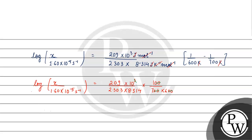Solving this: 1.60 into 10 raised to the power minus 5 per second equals 10 raised to the power of 209 into 10 cubed by 2.303 into 8.314 into 42. So x equals 1.60 into 10 raised to the power minus 5 into 10 raised to the power of 209000 by 2.303 into 8.314 into 42.